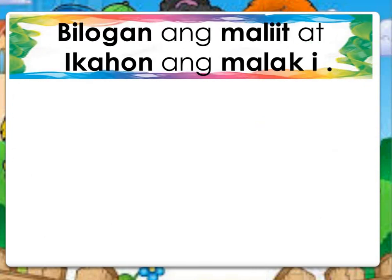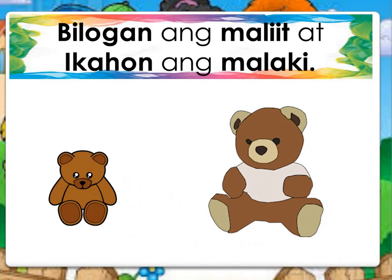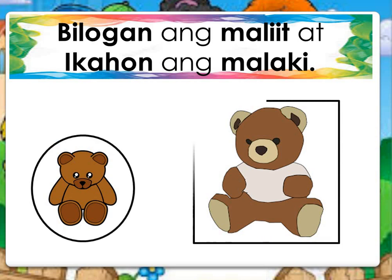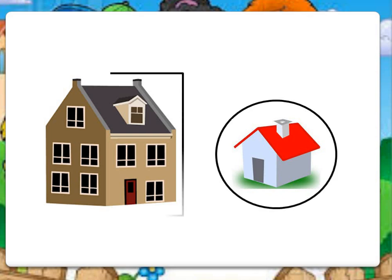Ngayon naman, bilogan ang maliit at ikahon ang malaki. Alin dito ang maliit at alin ang malaki? Maliit, malaki. Alin dito ang maliit at alin ang malaki? Maliit? Malaki? Mapisa!